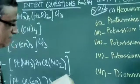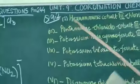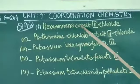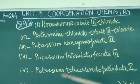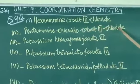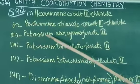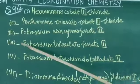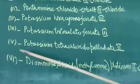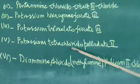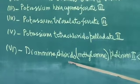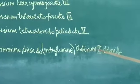Now, coming to the names, portion number 9.2, write the names of the following coordination compound. The first one is hexamine-cobalt-3-chloride. The second one is pentamine-chlorido-cobalt-3-chloride. Third is potassium hexacyanoferrate-3. Fourth is potassium trioxalato-ferrate-3. And the fifth is potassium tetrachloro-palladate-2. And the sixth is diamine-chlorido-methylamine-platinum-2-chloride.